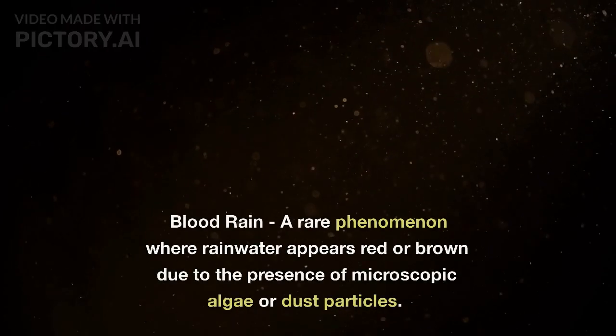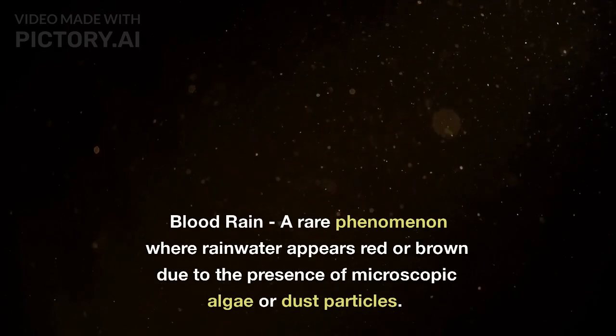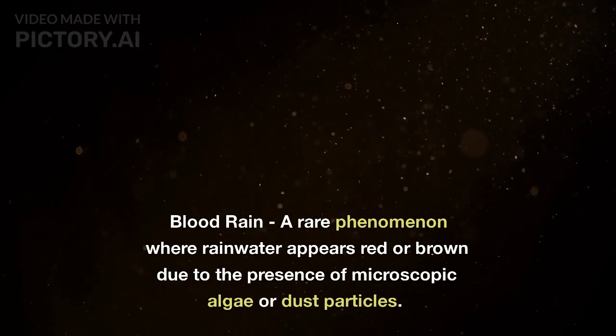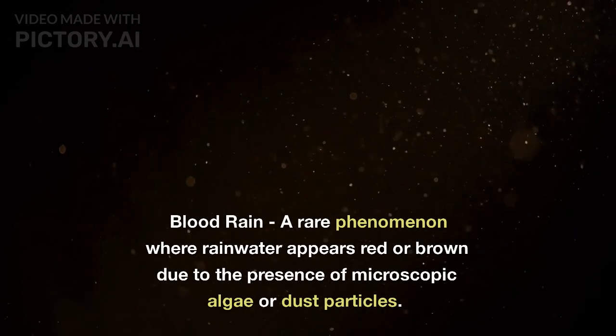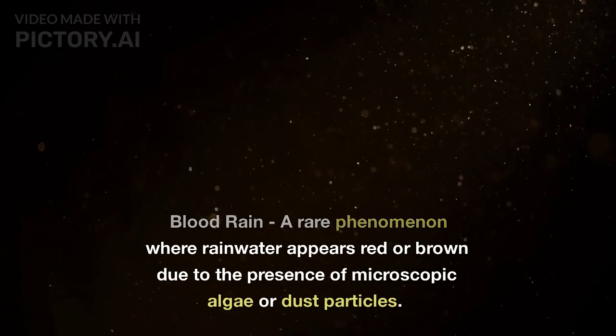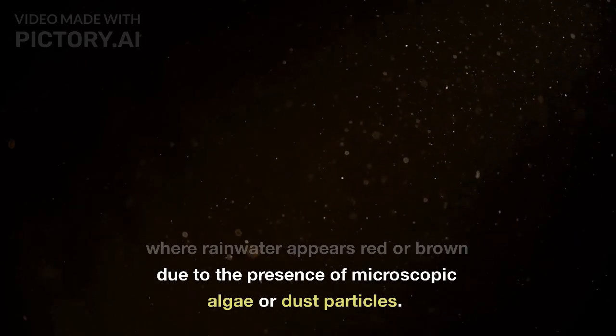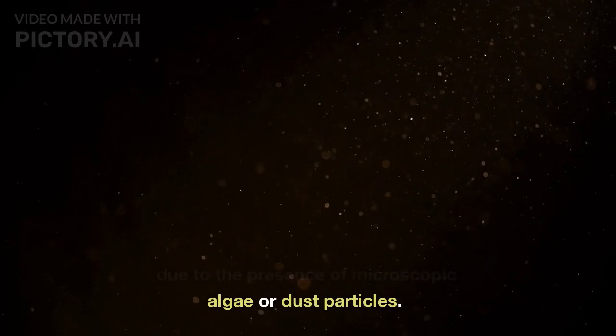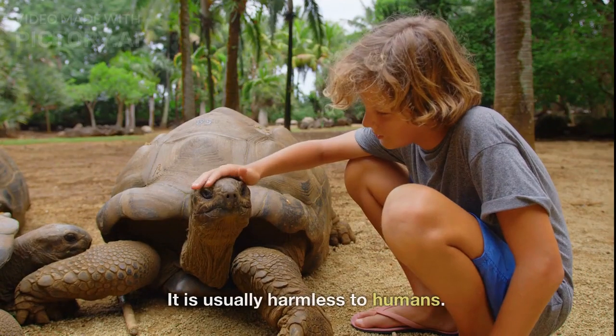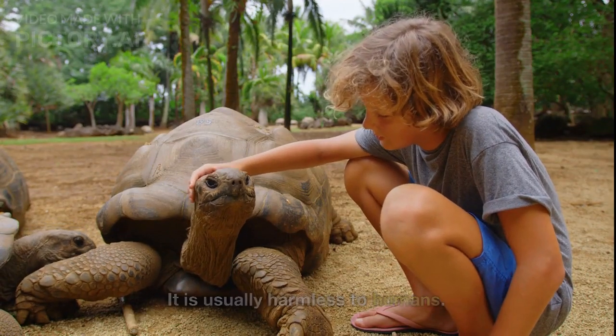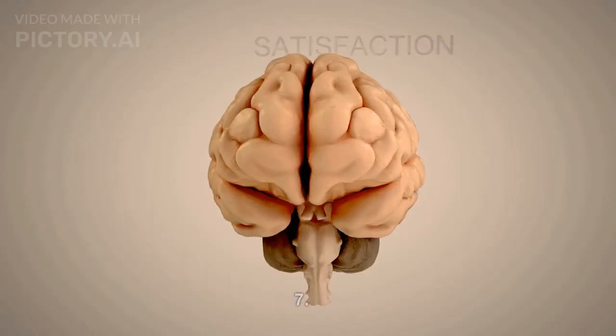6. Blood rain: a rare phenomenon where rainwater appears red or brown due to the presence of microscopic algae or dust particles. It is usually harmless to humans.